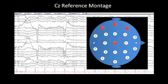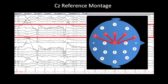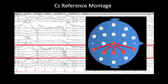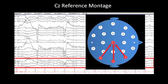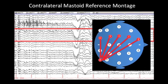This Cz reference montage is arranged in the same way as the anterior-posterior bipolar montage: first a left temporal chain, then a left parasagittal chain, then a midline chain, then a right parasagittal chain, and then a right temporal chain. There are many other types of common reference montages, and we can compare signals on the head to any reference we like. Another option is the ipsilateral mastoid montage, where all electrodes on one side of the head are compared to a single electrode attached to the ipsilateral mastoid. We can also compare electrode positions to the contralateral mastoid.